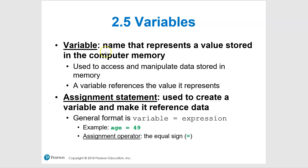Section 2.5 on variables. A variable is a name that represents a value stored in the computer's memory. We use them to access and store data. For example, the statement 'age equals 49' uses the assignment operator — the equal sign — to assign the value of 49 to the variable named age.